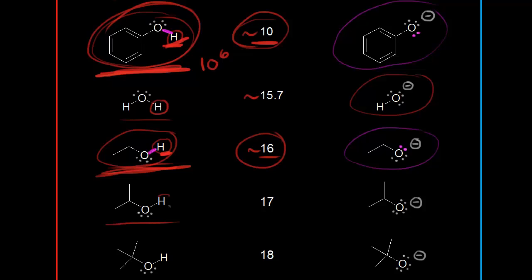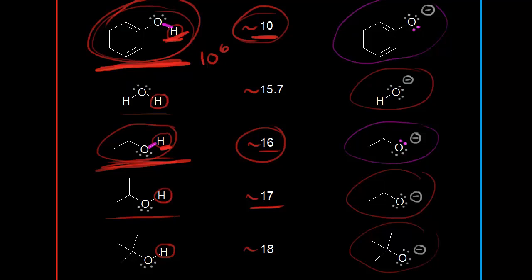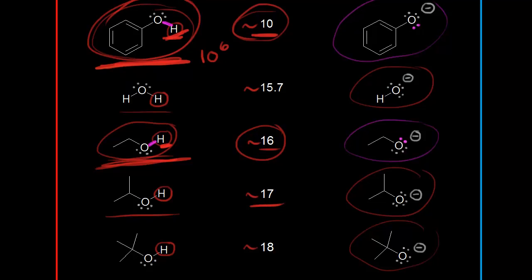Next, let's look at another alcohol. This proton has a pKa value of approximately 17, and this would be the conjugate base. This proton on the next alcohol has a pKa of approximately 18, giving us this conjugate base. Later we'll talk about the reasons why these alcohols have different pKa values.